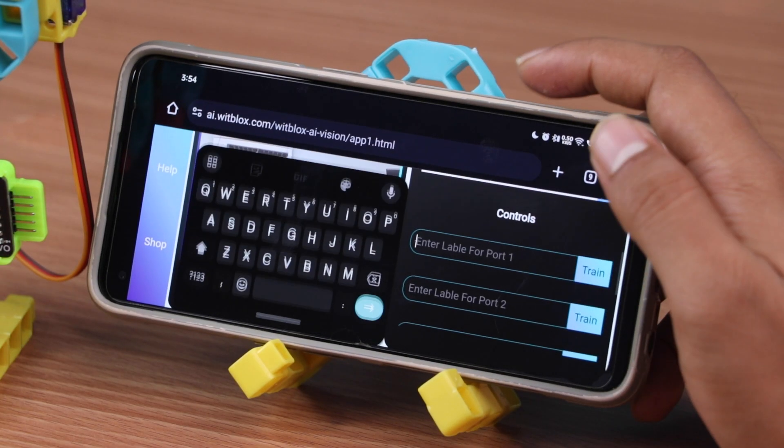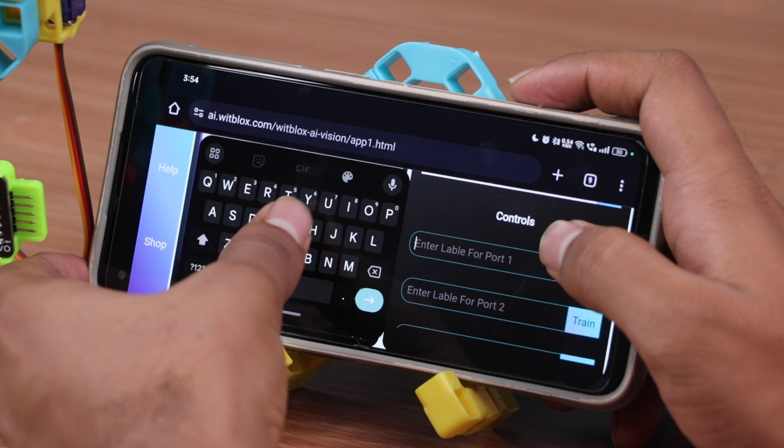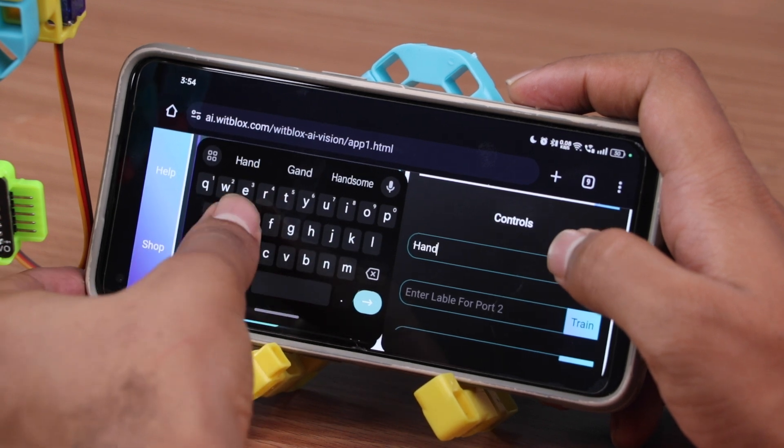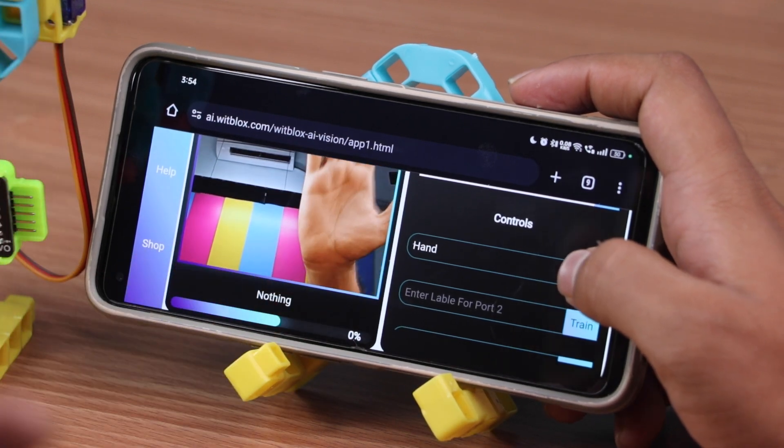For the training part, enter hand in port 1. Once entered, keep your hand in front of the camera and click train at least 20 times.